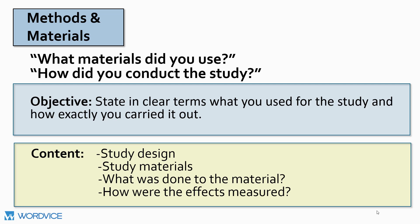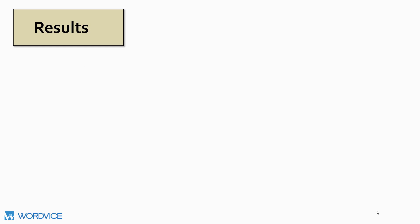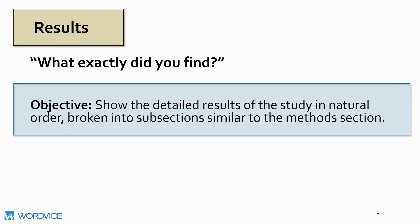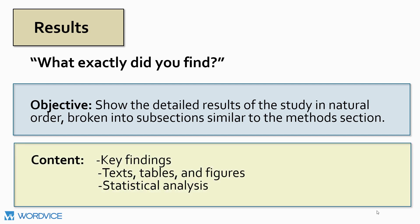In the results section, you are asked to answer the question: what exactly did you find? Your goal is to show the detailed results of the study in natural order. You should break these into subsections, similar to what you do in the methods section, but with a little bit more explanation of these results. For your content, you want to include any key findings of the study, text tables and figures that you used, and statistical analysis that you gleaned from the study results.